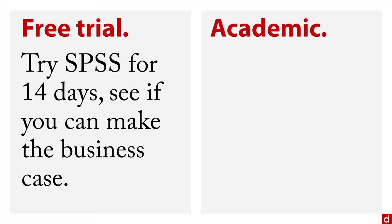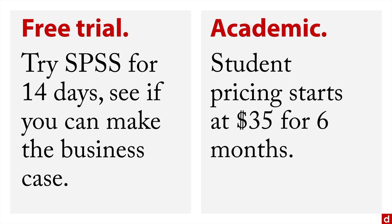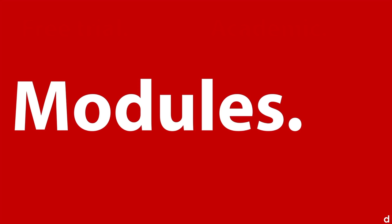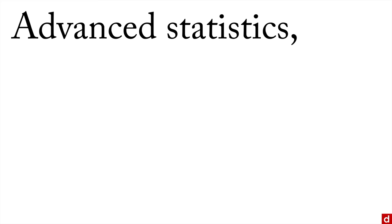There is also academic pricing. Student pricing for SPSS starts at $35 for six months. It's not the super-duper version, but it is absolutely sufficient for doing the majority of academic research. We also need to talk about modules — the components that add extra functionality to SPSS, and the things that primarily differentiate the different editions.